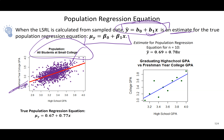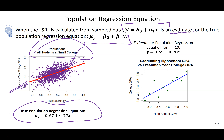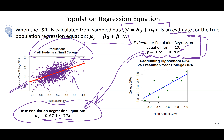Usually we don't have the entire population, so we take a sample and estimate that line from our sample. Here, the true population regression equation — when they took all individuals at this small college and used their high school GPA and first-year college GPA — gave one line. When we took a sample of just 10, the predicted line we got was 0.69 plus 0.78 times high school GPA, which is not extremely far off from the true population line of 0.67 plus 0.77 times high school GPA.